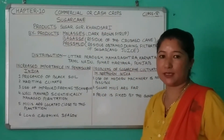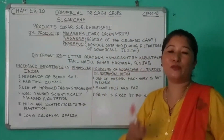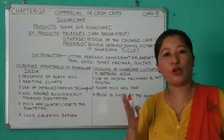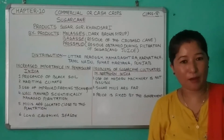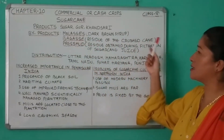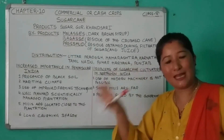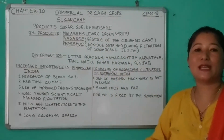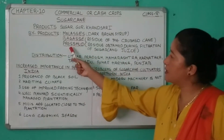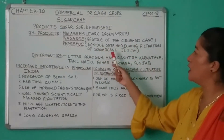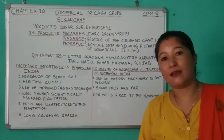The products of sugar cane are sugar, gur, and khandsari. The by-products are molasses, bagasse, and press mud. Molasses is a dark brown syrup obtained during refining of raw sugar and is used for making alcohol, fertilizers, and rum. Bagasse is the residue of the crushed cane after extracting the juice and is used as raw material in the paper industry and for making cardboard. Press mud is a residue obtained during filtration of sugar cane juice and is used for making shoe polish, wax, and carbon paper.